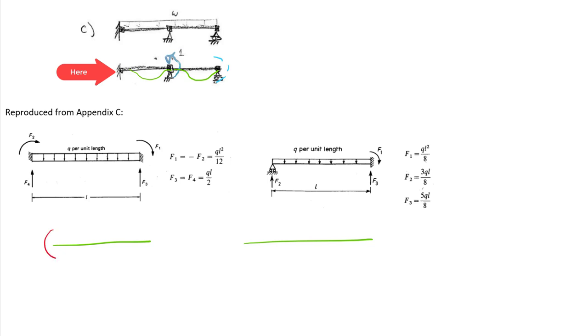On the left-hand member we have negative moment at each end. On the right-hand member we have negative moment on the left end and no moment on the right end.